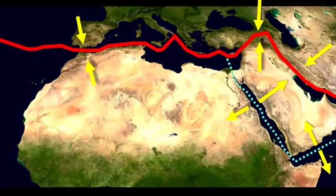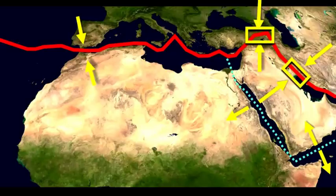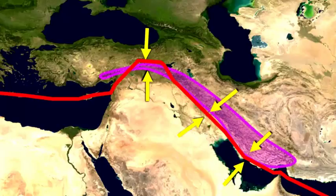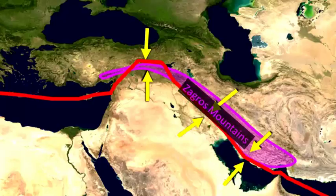Now let's go to where we have more plate collision boundaries, where we have the Eurasian plate colliding with the Arabian plate. We should expect along this plate convergence boundary — this red line — to find a mountain range running parallel to it. And what do you know, we do: the Zagros mountain range. The Zagros mountain range goes right along this collision between the Arabian plate on one side and the Eurasian plate on the other side.